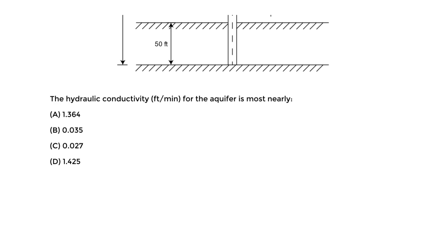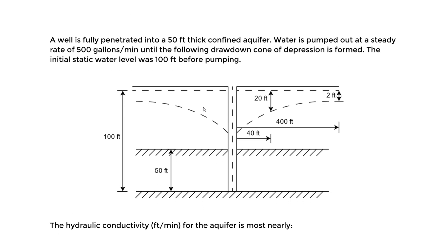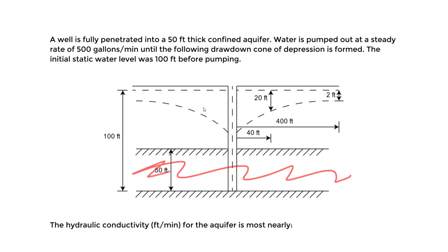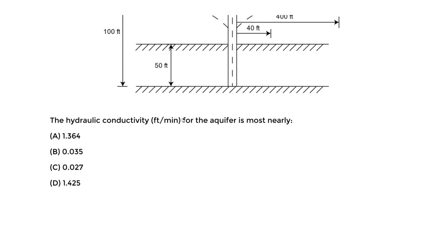We'll refer to the handbook. For a confined aquifer, we use the Thiem equation. We know we have a confined aquifer because we have a confining layer, or aquitard layer. We drilled this well all the way to the bottom, and the aquifer is 50 feet thick — that's what the thickness refers to.